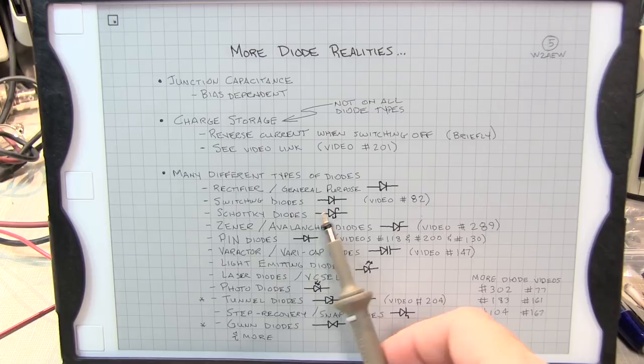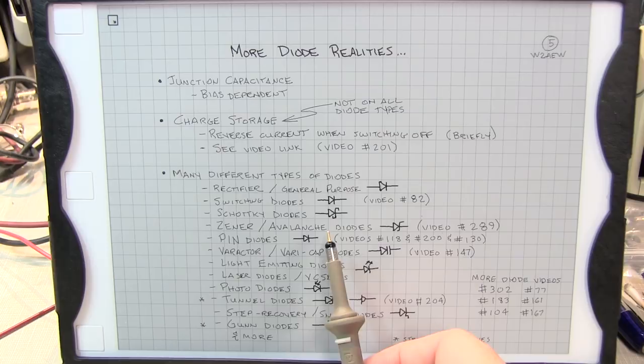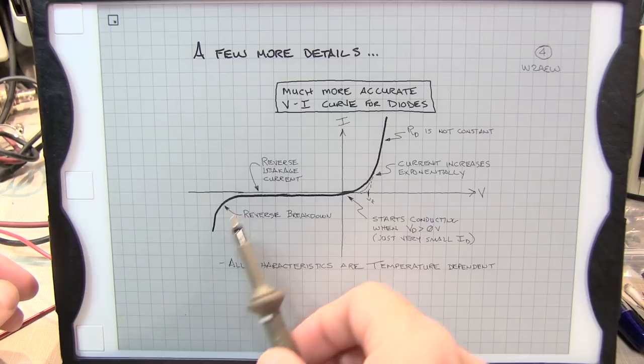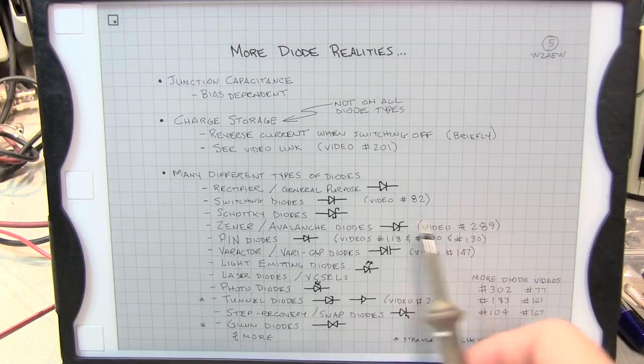Now zener or avalanche diodes, these were covered extensively in video number 289, are diodes where you're intentionally using them in that reverse breakdown situation, that situation right here in the diode curve. So I cover those types of diodes pretty extensively in 289.